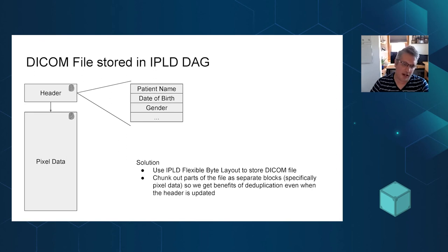And so by using something like this, I can store the pixel data, which doesn't change, independently of the header data, and change it and get the benefits of immutability and also change tracking.